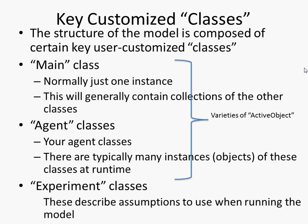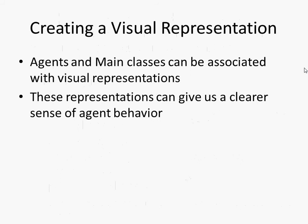Finally, the experiment classes define scenarios which we can change. Now, these classes — and indeed the simulation and the experiments — can be associated with visual representations. These representations are particularly useful in an agent-based modeling context because they give us a clear sense of agent behavior. Visualizations are key for recognizing emergent patterns that we may then wish to cross-check against patterns in the world.